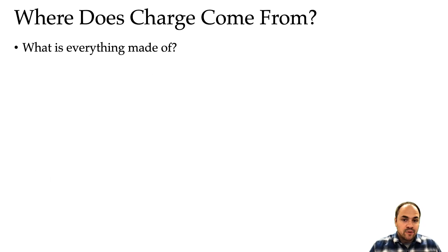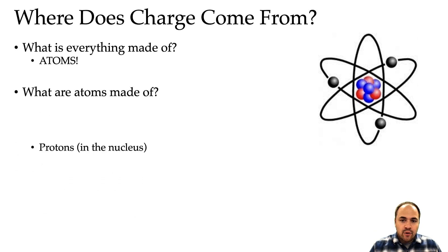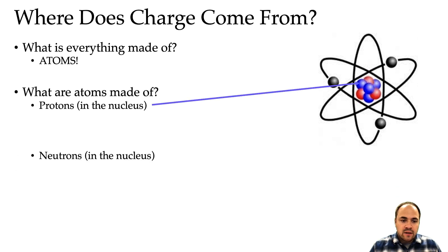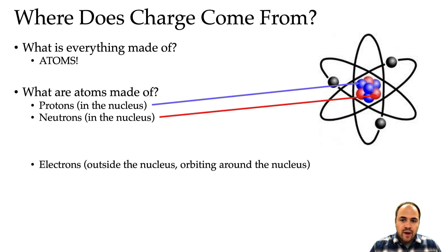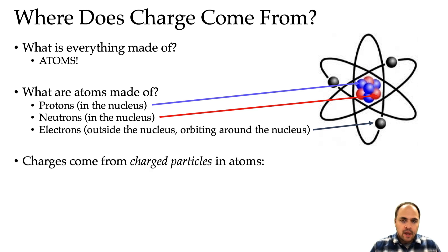So where does charge come from? Well, everything's made of atoms, and atoms themselves are made up of three basic particles. You have your protons in the nucleus, you have your neutrons in the nucleus, and circling around the nucleus in their orbitals you have your electrons.